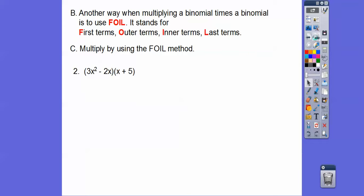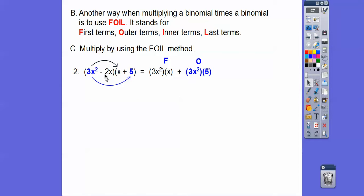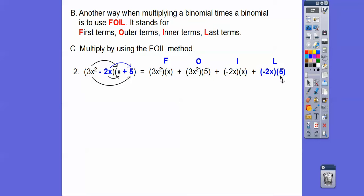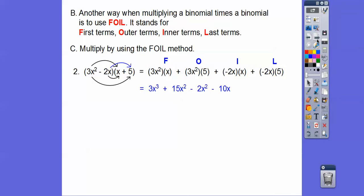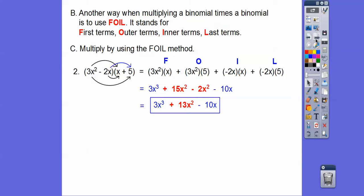Let's try another one. First times first: 3x squared times x. Outer times outer: plus 3x times 5. Careful with the inner — the inner on this one is negative 2x, so inner times inner is negative 2x times x. And last times last: negative 2x times 5. So this gives us 3x cubed plus 15x squared, then negative 2x squared minus 10x. We can combine like terms: 15x squared minus 2x squared is 13x squared. There's our final answer.